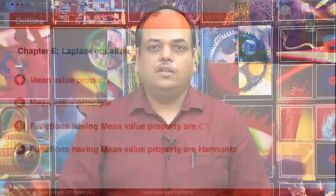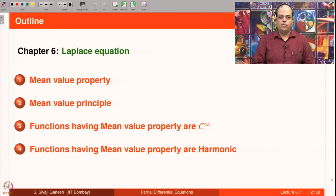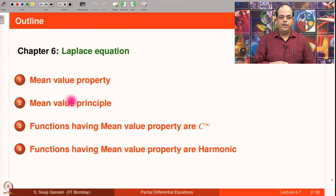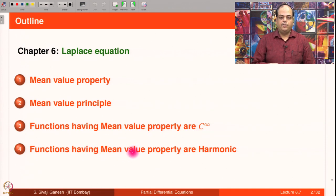Welcome. In this lecture we are going to discuss mean value property and some of its consequences. The outline is as follows: first we introduce the mean value property, then we show the mean value principle, namely that mean value property holds for harmonic functions. Then we show that functions having mean value property are C-infinity functions, and functions having mean value property are harmonic functions.